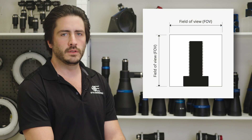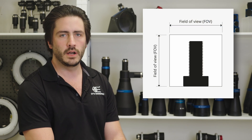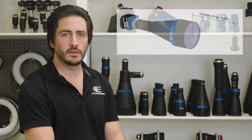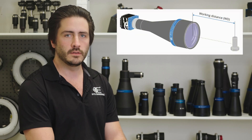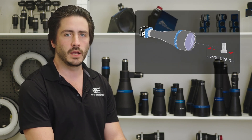First, consider the field of view, which represents the total area viewable by the lens and captured by the camera sensor. Next, the working distance defines the distance between the lens and the object where the image is sharpest. Additionally, depth of field indicates the maximum range where the object remains acceptably in focus.